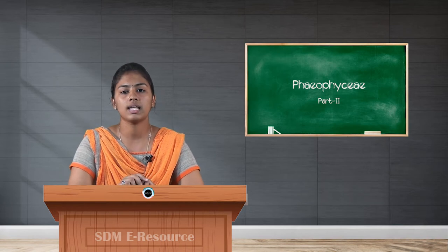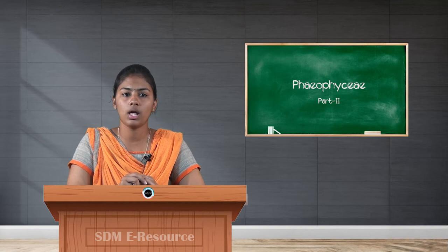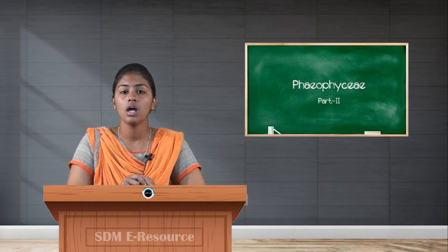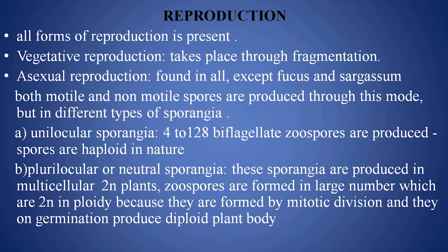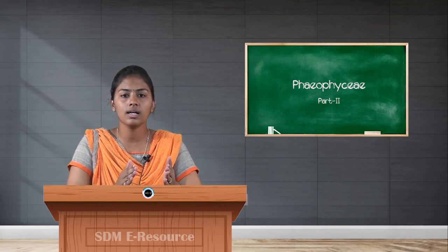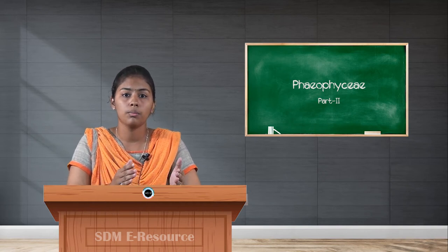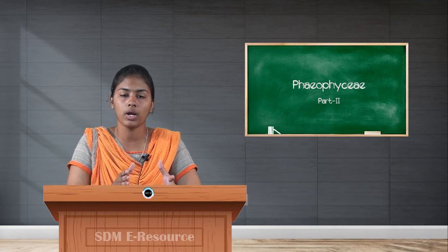The second type is plurilocular sporangia, also called neutral sporangia. These are produced in multicellular 2n plants — that is, the sporophytic generation of Phaeophyceae. The zoospores are formed in large numbers and are 2n (diploid). They are formed through mitotic divisions, so the chromosome number remains 2n throughout spore production in plurilocular sporangia.